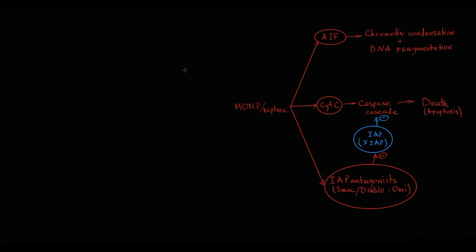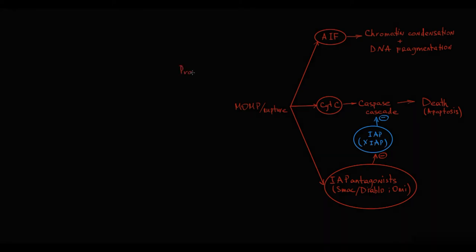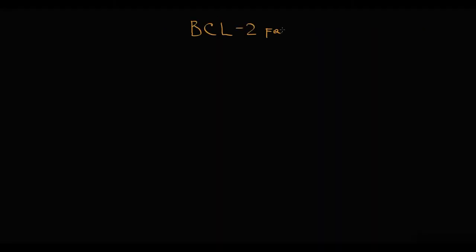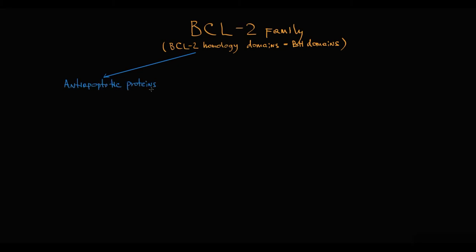Which factors control mitochondrial outer membrane permeabilization? These factors are called pro-apoptotic and anti-apoptotic proteins. Despite their opposite functions, they have much in common — they are all members of the BCL-2 family and all have BCL-2 homology (BH) domains. The main difference is the quantity of BH domains: all anti-apoptotic proteins have 4 BH domains, while all pro-apoptotic proteins have fewer than 4.